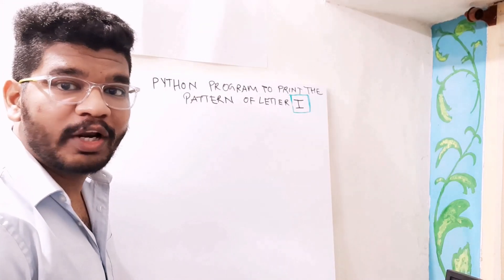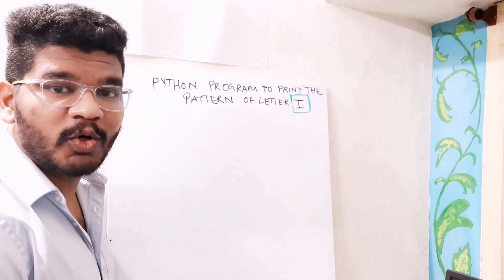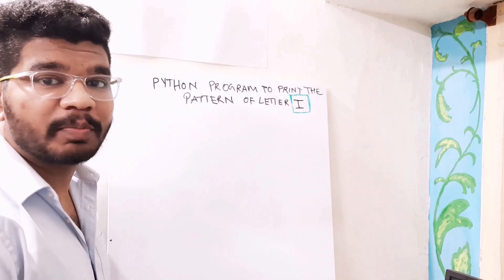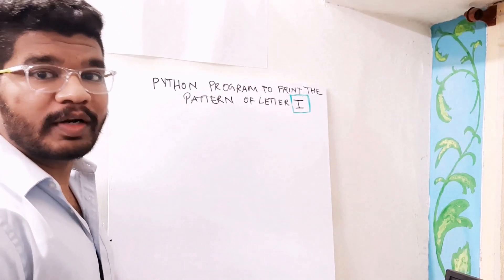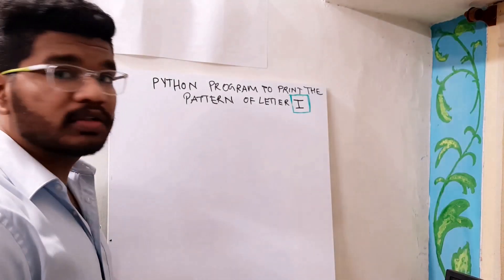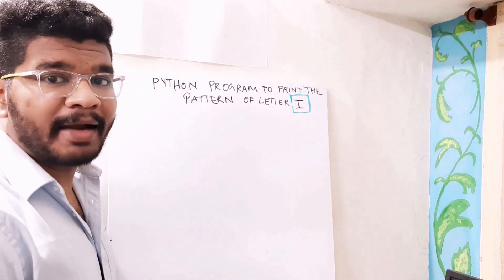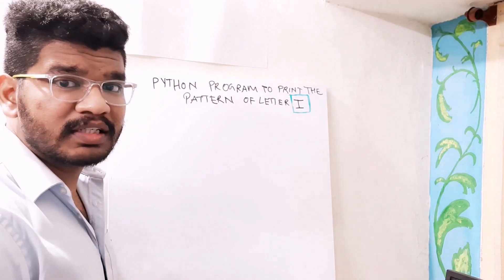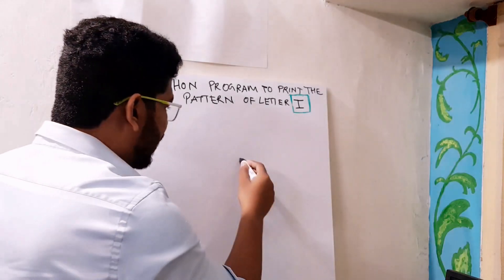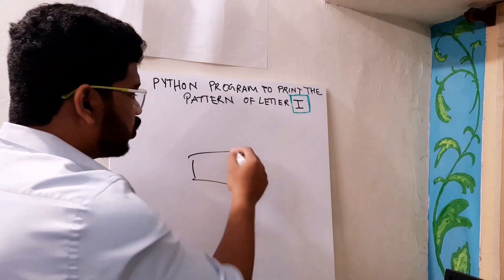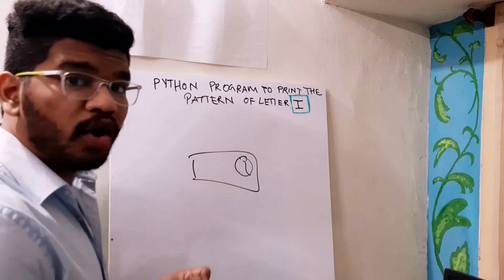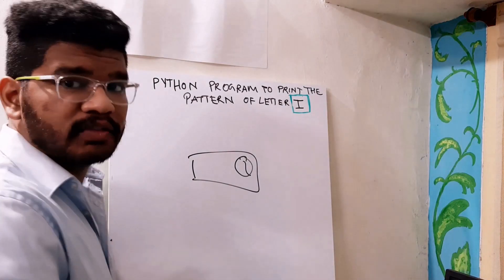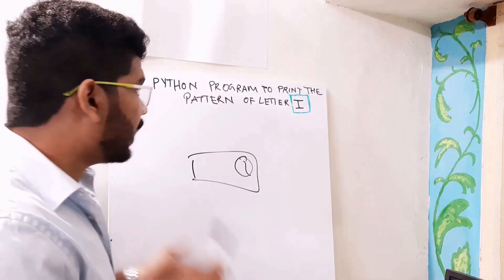Hello everyone, welcome back to programming in python.com. I am back with another video. In this video, I am going to print the pattern of letter I. In the previous videos, I have told you how to print the patterns up to letter H. I will link the playlist in the description and also in the button in the right corner of this video. Make sure you click that for all the previous videos on the patterns up to letter H, and it's time for letter I.